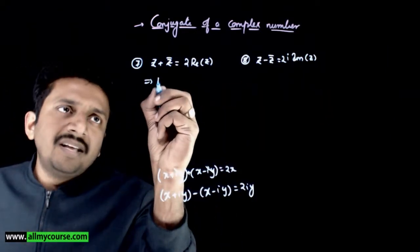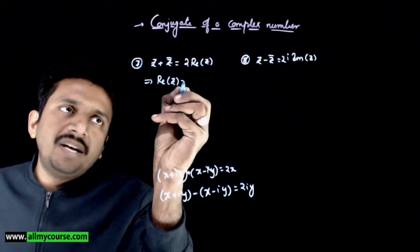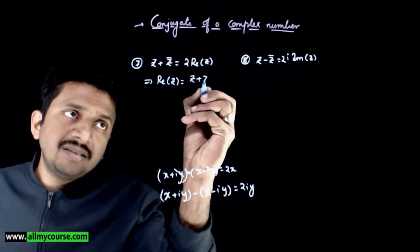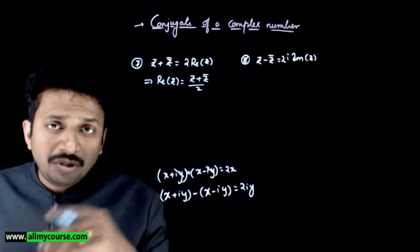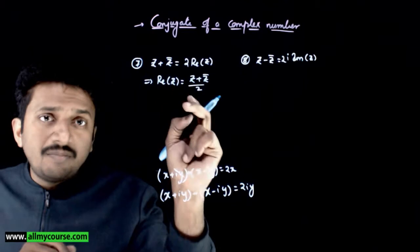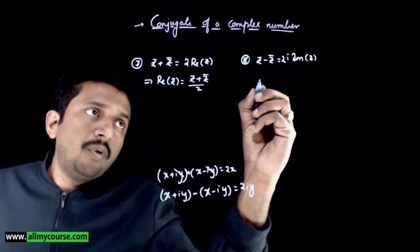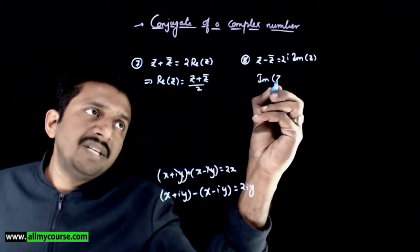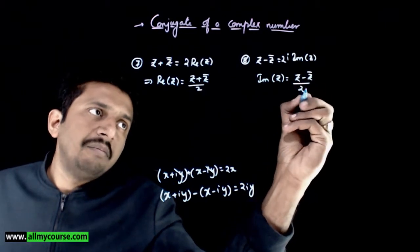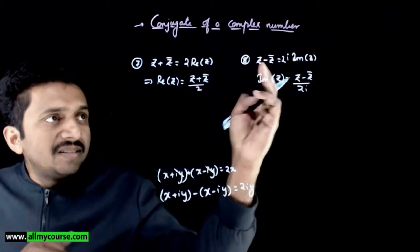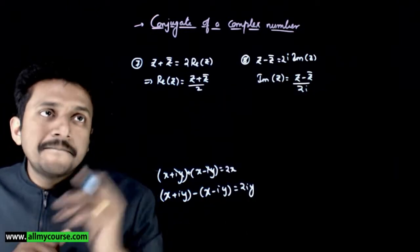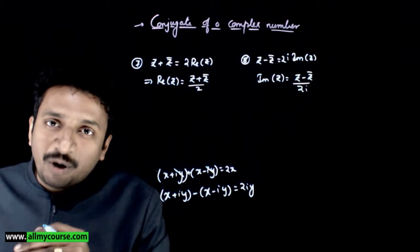This implies the real part of z can be written as (z plus z bar) divided by 2, and the imaginary part of z is (z minus z bar) divided by 2i. These are two additional useful properties.